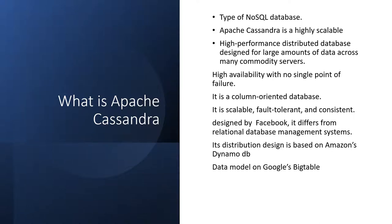Apache Cassandra was introduced in 2008 at Facebook by two Indian engineers, Avinash and Prashant Malik. It was used for Facebook's inbox search to handle enormous amounts of data. It is one of the most famous NoSQL databases — highly scalable, high performance, and a distributed database designed for large amounts of data across commodity servers. It has high availability with no single point of failure due to multi-node availability, and it is a column-based database.